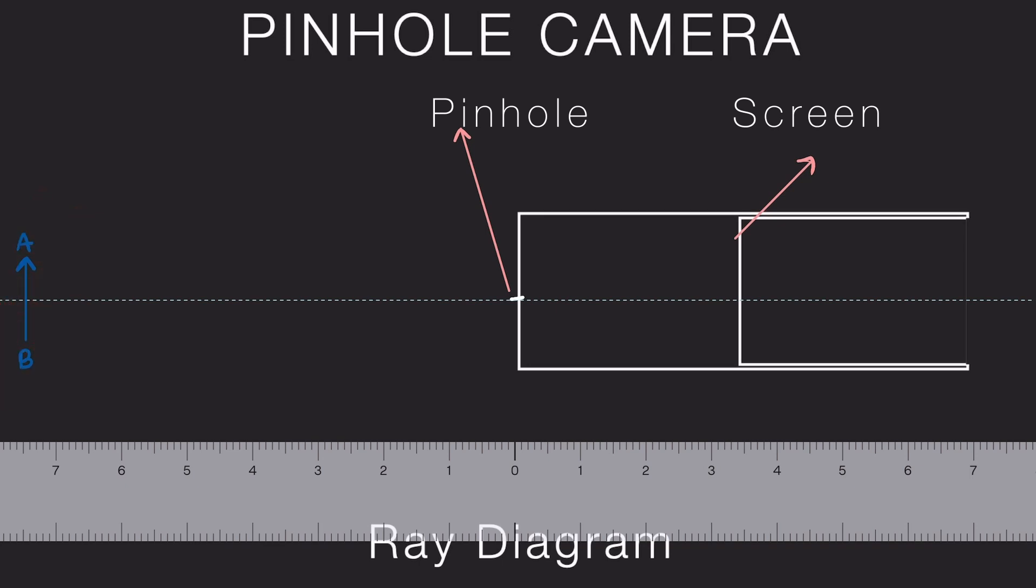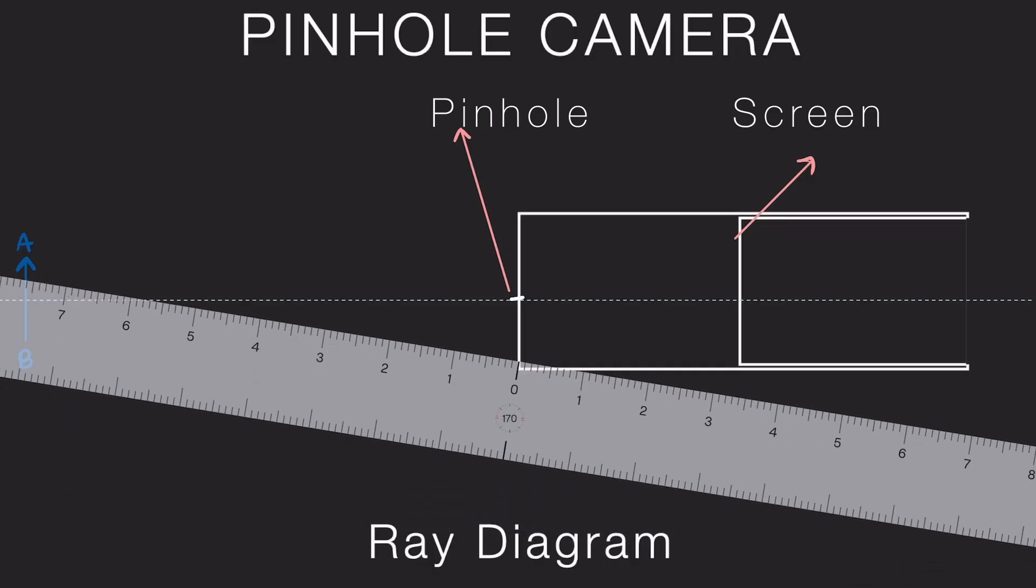infinitely many rays spread out. But for our diagram, we only need two rays to understand what's happening.